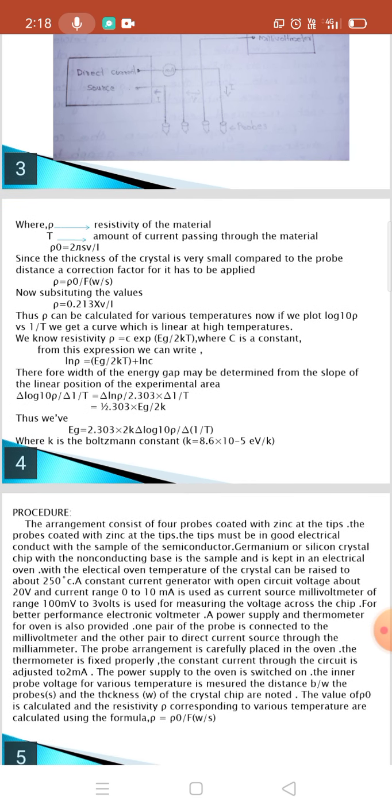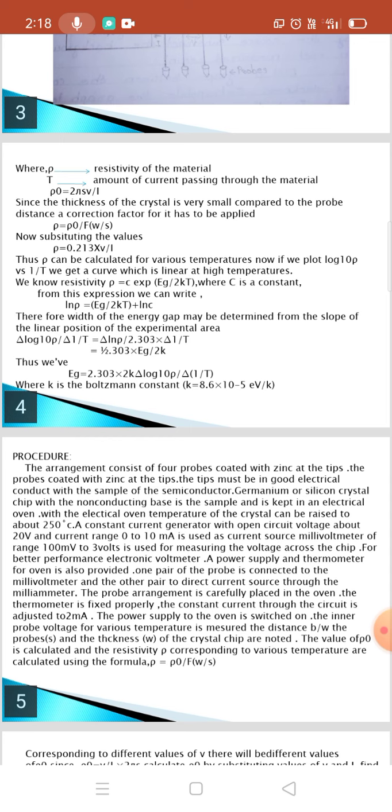Thus, rho can be calculated for various temperatures. If we plot the log10 rho versus 1 by T, we get a curve which is linear at high temperature. Now, resistivity rho is equal to C into exponential Eg by 2KT, where C is a constant. From the expression, we can write ln of rho is equal to Eg by 2KT plus ln of C.